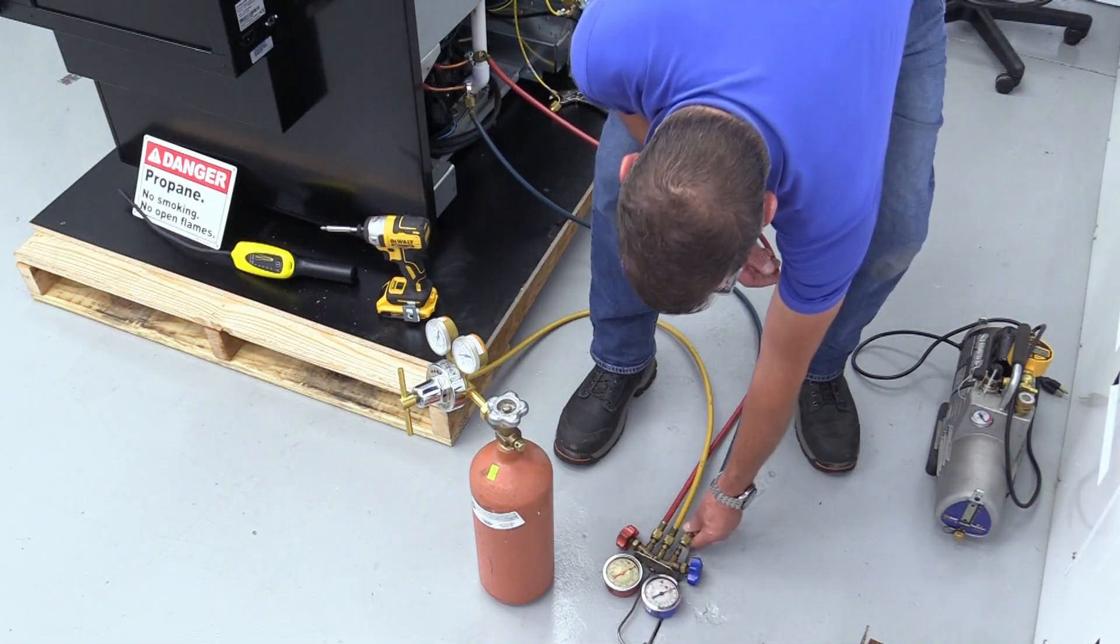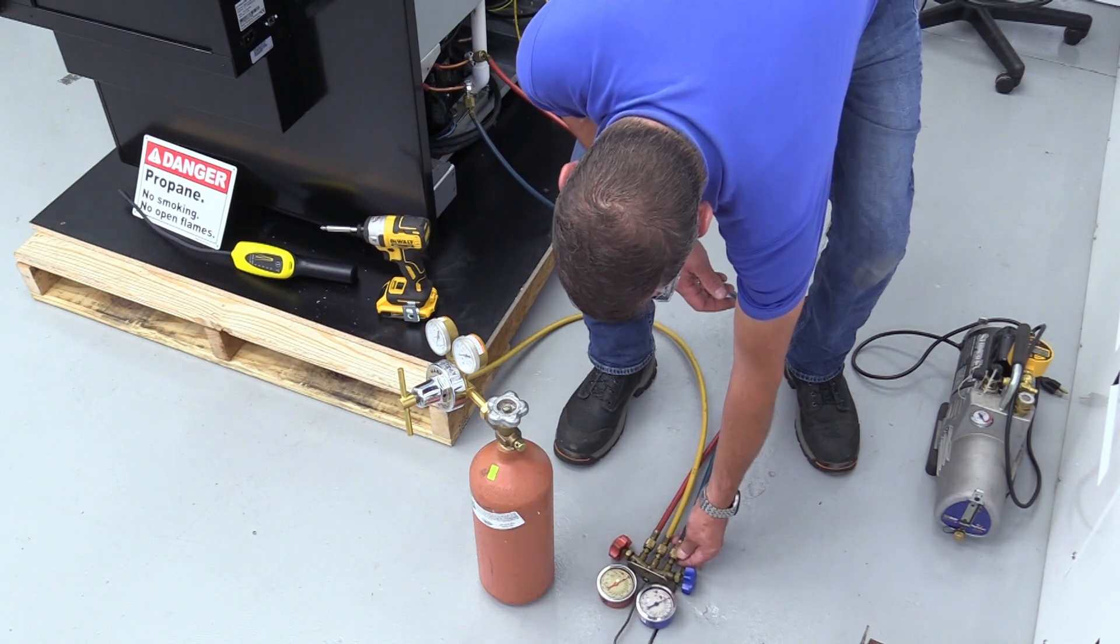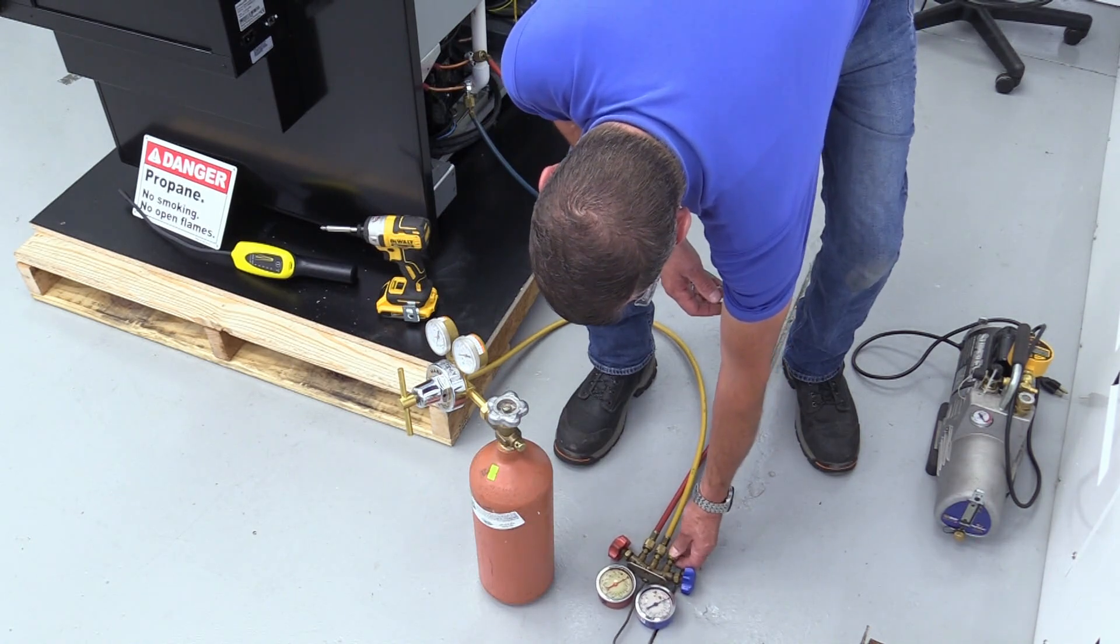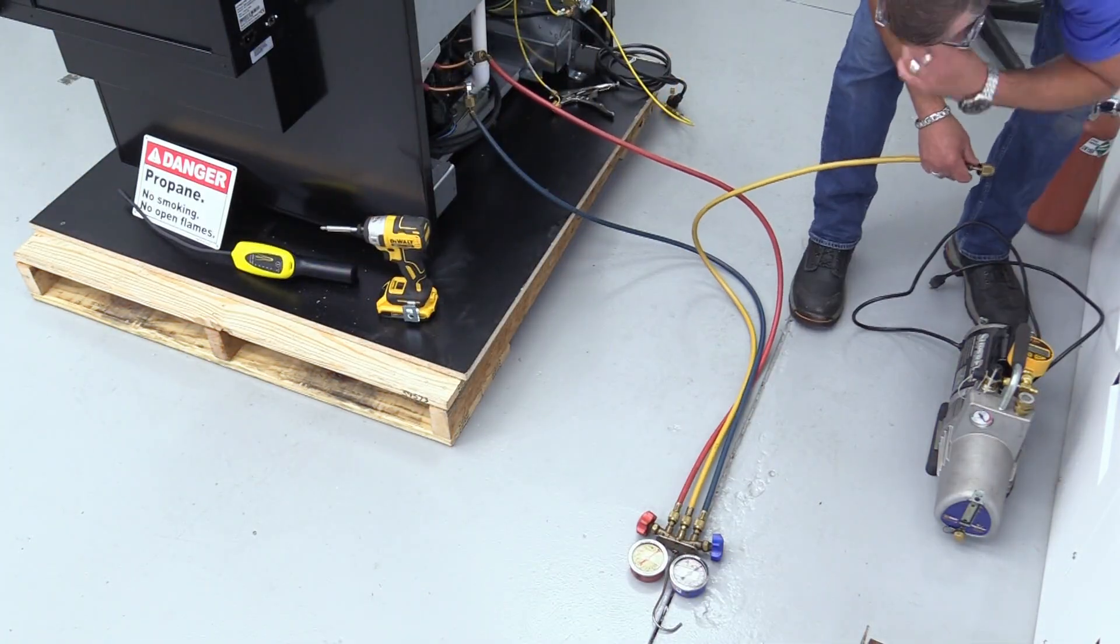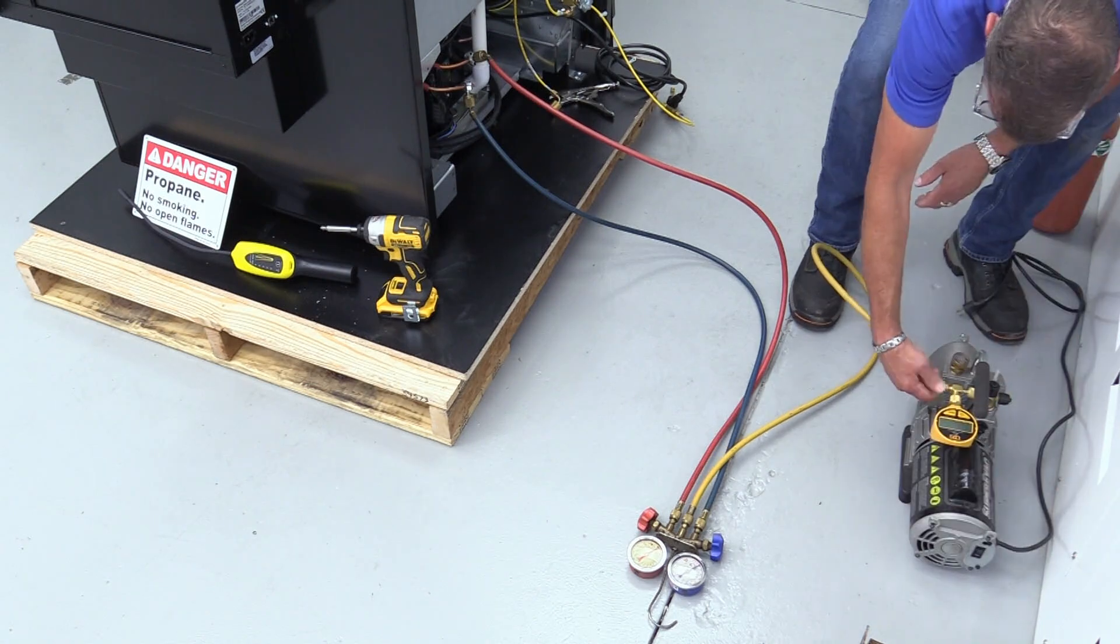Pressurize the system with nitrogen at 200 PSIG and check for leaks. Vacuum the system to below 500 microns and ensure the vacuum sustains for 10 minutes.